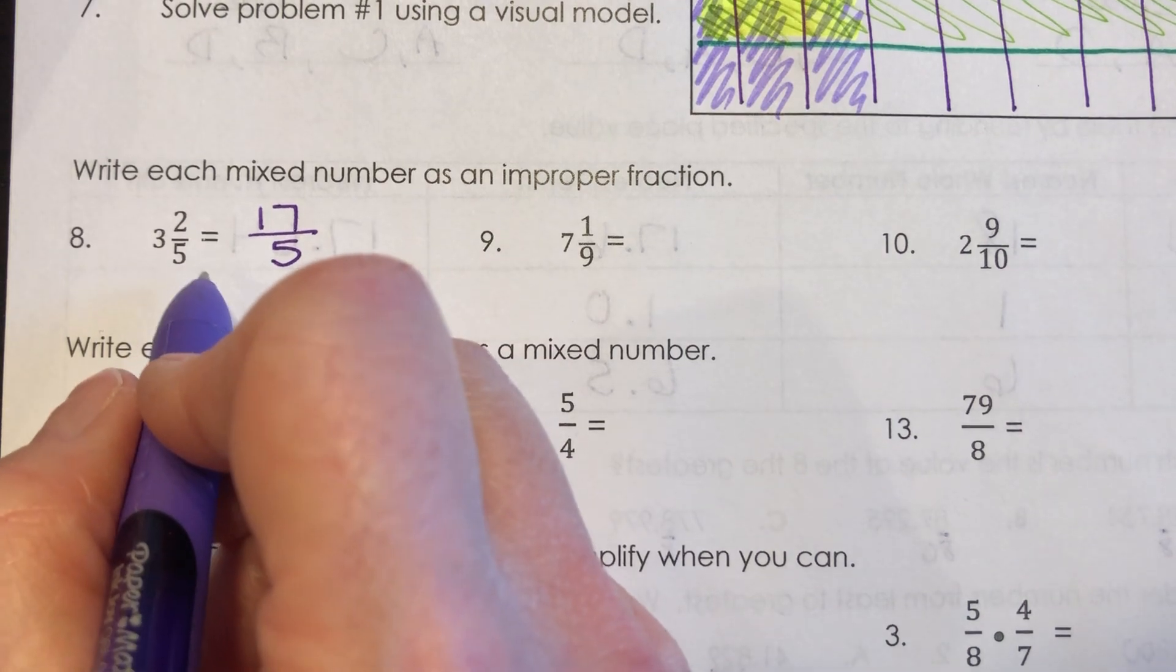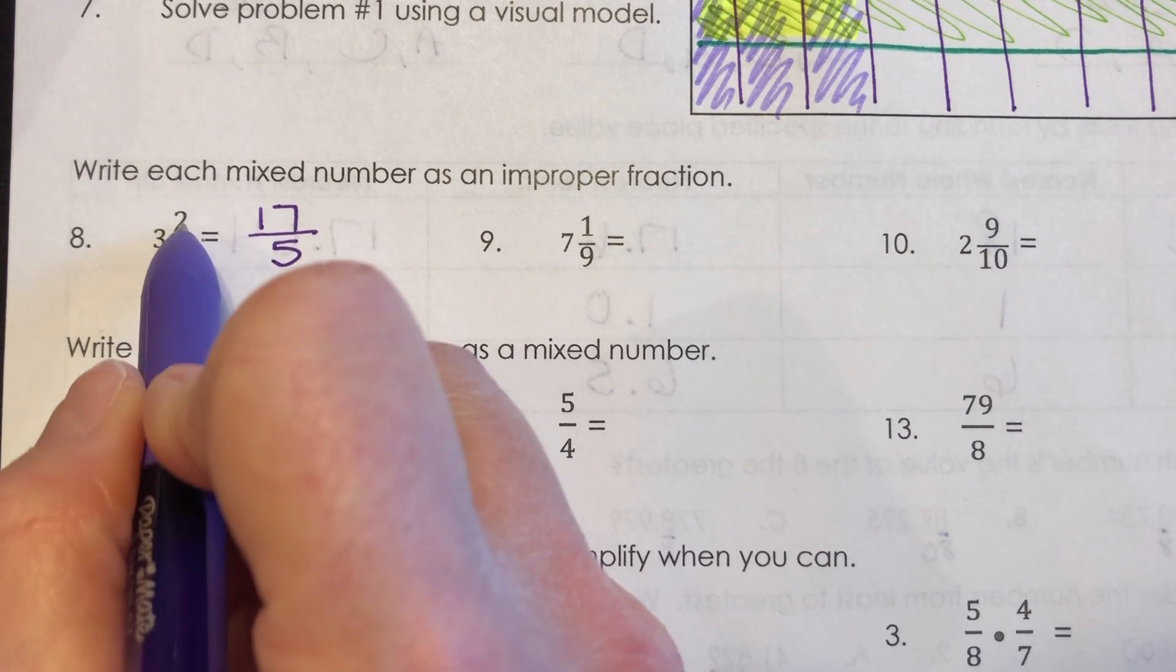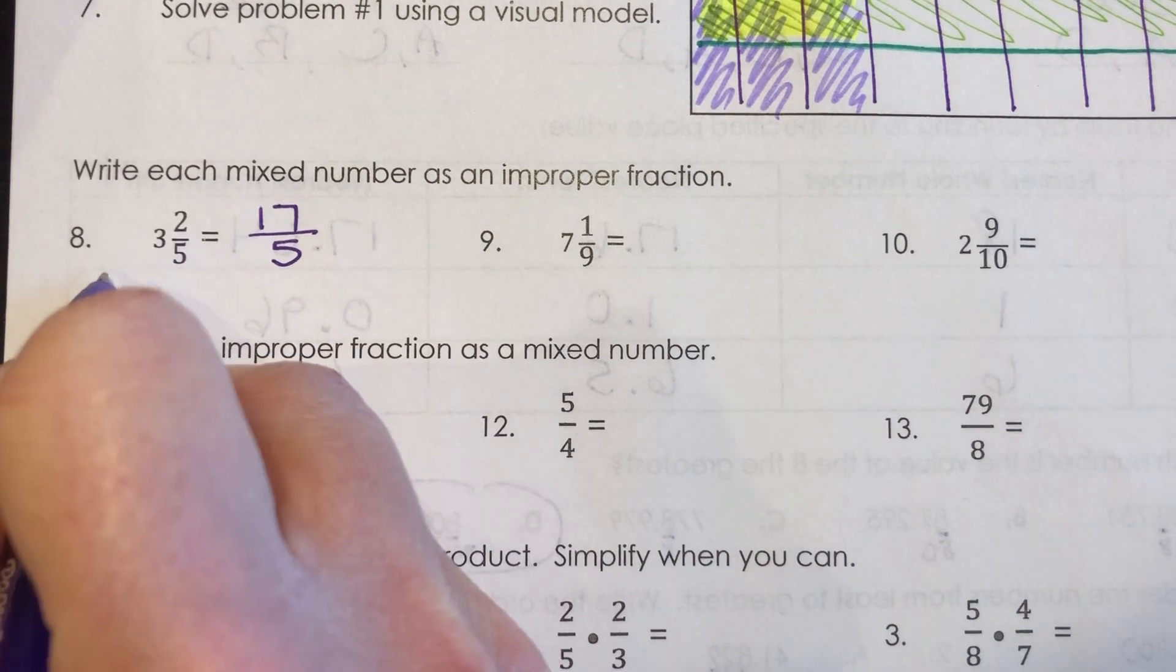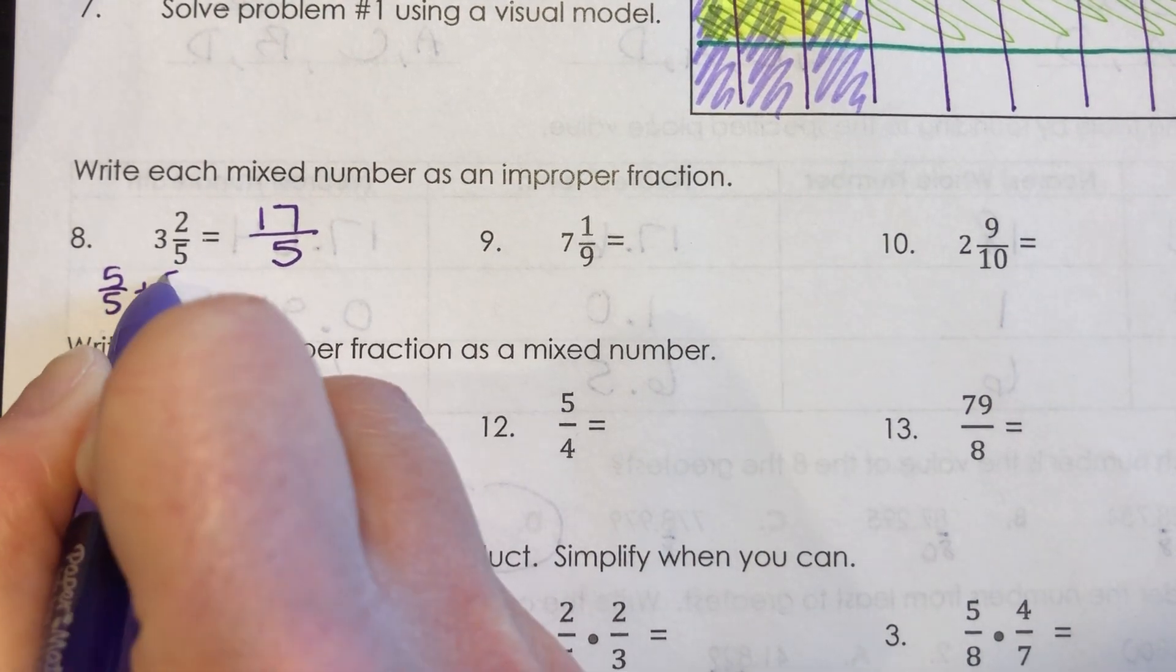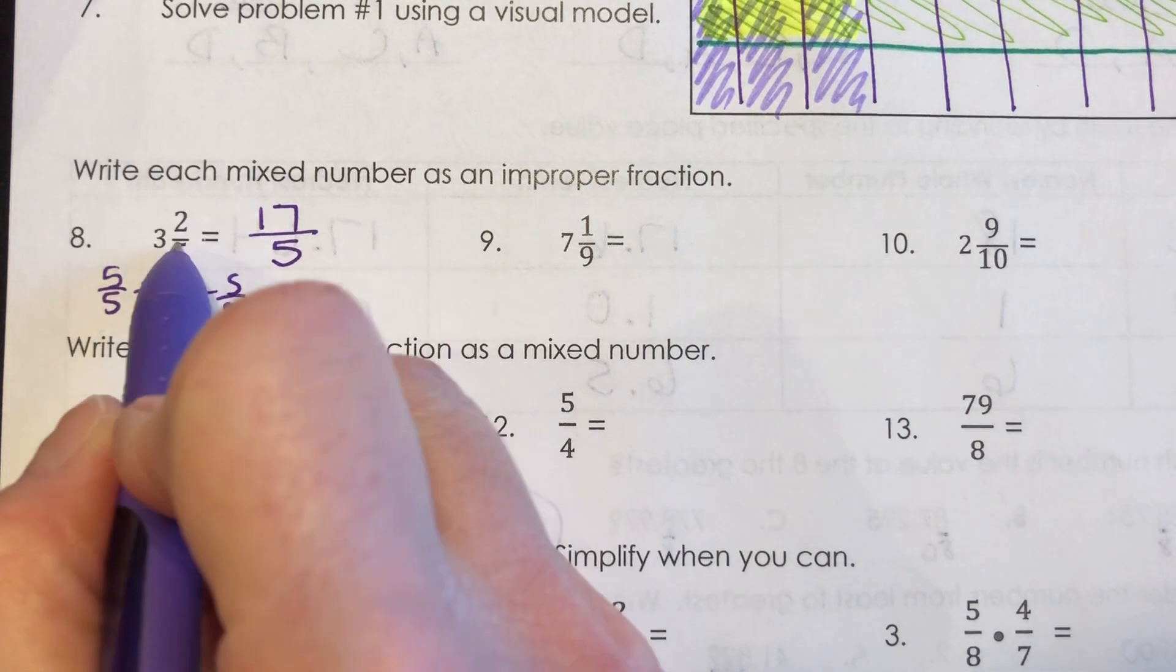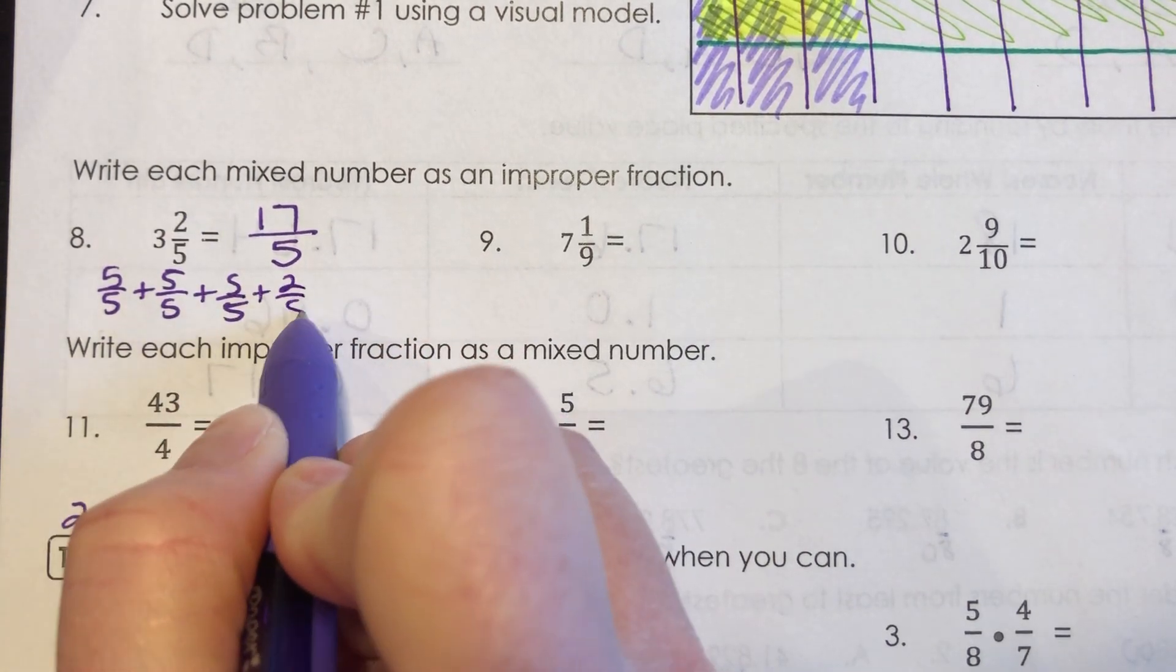And again, if you're like, I just still don't understand Mrs. Trombley, if it's 3 and 2 fifths, one whole is 5 fifths, right? So that means if you have 3, that you have 5 fifths plus another 5 fifths plus another 5 fifths. So there's your 1, 2, 3. Plus you have this extra 2 fifths.